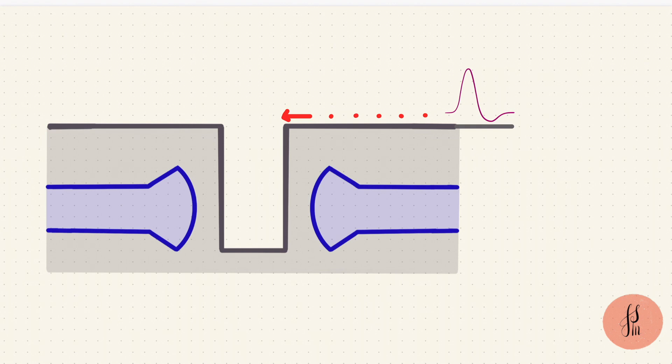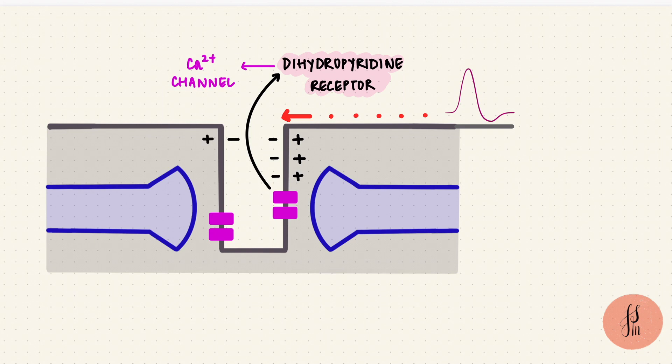When the action potential starts on the muscle membrane, it gets propagated along the membrane. Now remember the T-tubules that dip down from the surface, it gets propagated along that membrane as well. This membrane has a calcium receptor called the dihydropyridine receptor. This is a voltage-sensitive calcium channel. So when the action potential depolarizes the membrane in this area, the channel will open.